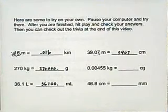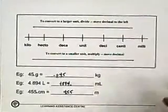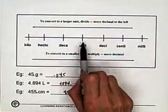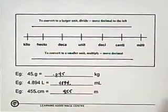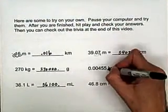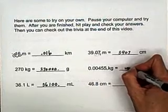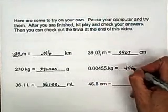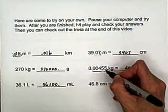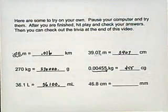This time we're going from kilograms to centigrams. Kilo to centi. One, two, three, four, five steps to the right. One, two, three, four, five. Four hundred and fifty-five. These are five places. Four hundred and fifty-five centigrams.